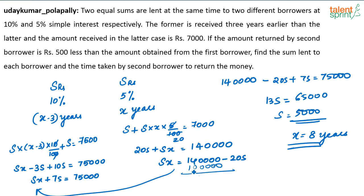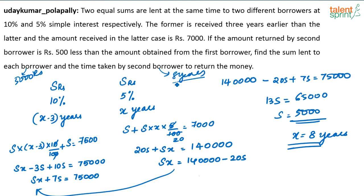Dividing, you get 8 only. So each borrower is getting 5000 rupees. The time taken by the second borrower is 8 years — he will return in 8 years. So the first borrower will return in X minus 3 equals 5 years.